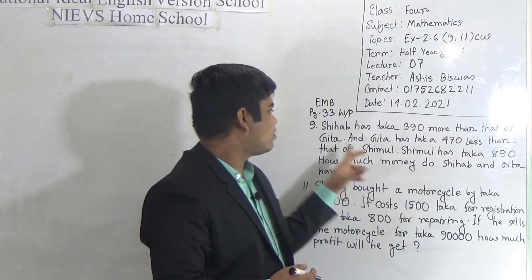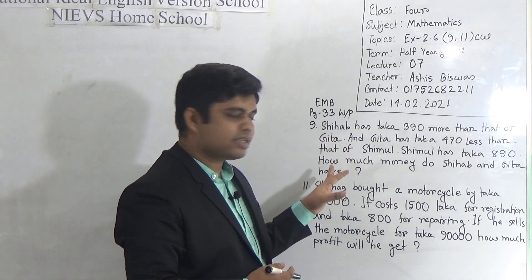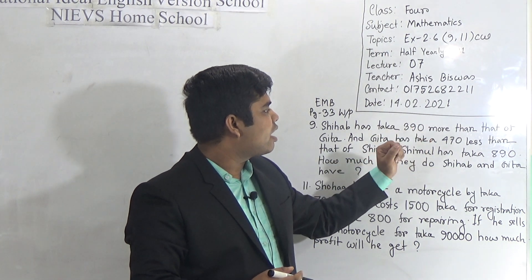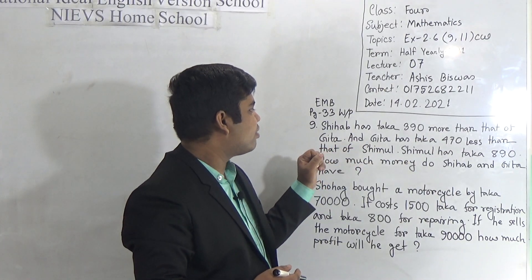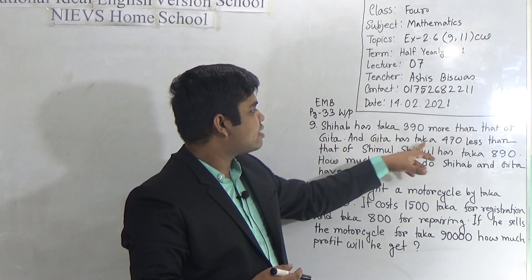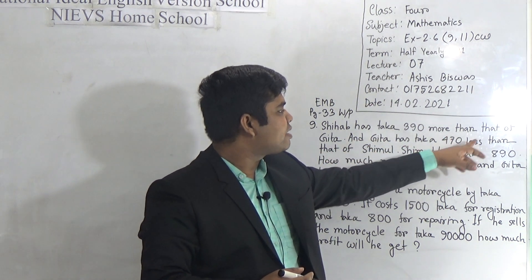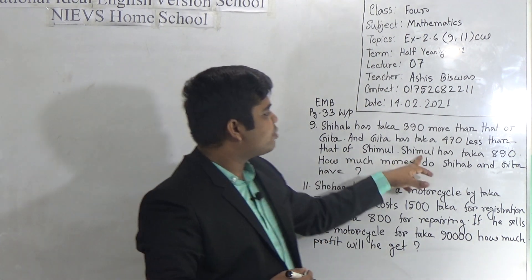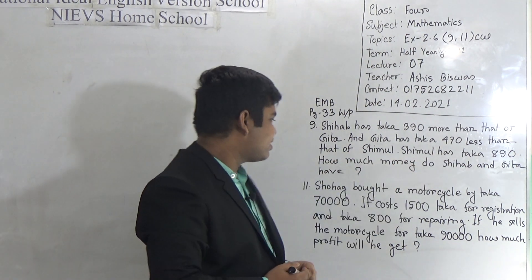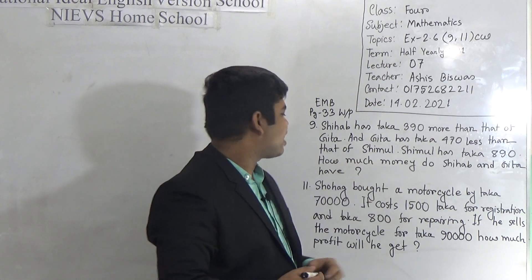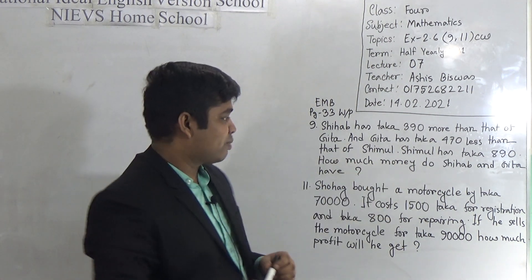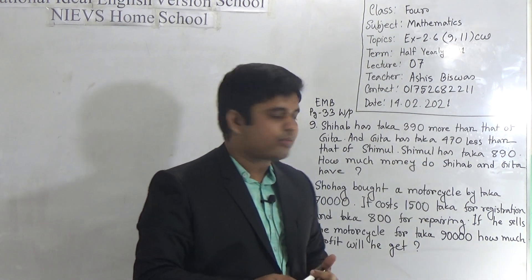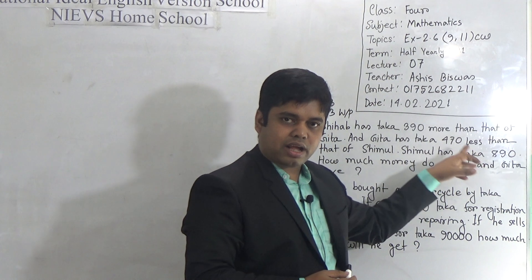Shihab has 390 taka more than that of Gita. Gita has taka 470 less than that of Shimul. And Shimul has taka 890. How much money do Shihab and Gita have? So my dear students, note that Shimul's amount is given, which is 890 taka.